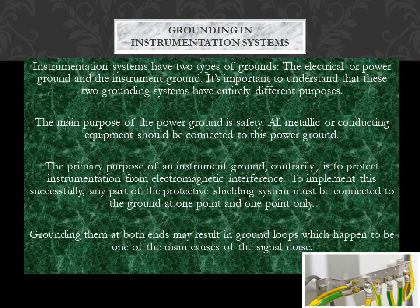Instrumentation systems have two types of grounds: the electrical or power ground, and the instrument ground. These two grounding systems have entirely different purposes. The main purpose of the power ground is safety, and all metallic or conducting equipment should be connected to it. The primary purpose of an instrument ground is to protect instrumentation from electromagnetic interference. To implement this successfully, any part of the protective shielding system must be connected to ground at one point only. Grounding at both ends may result in ground loops, which are one of the main causes of signal noise.